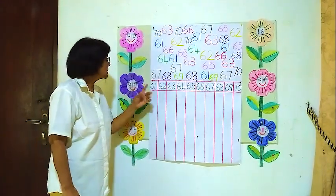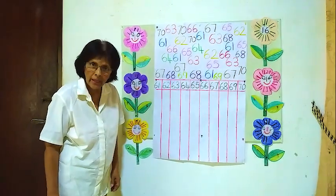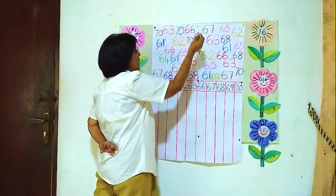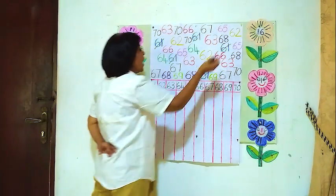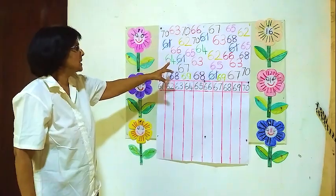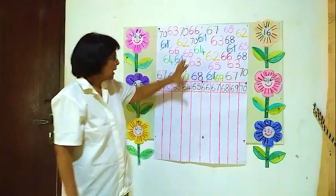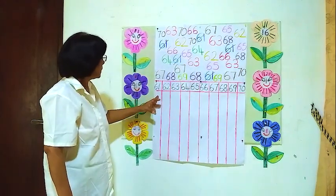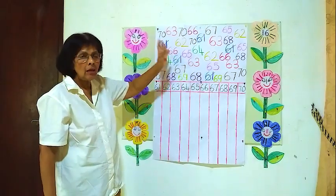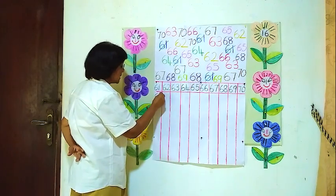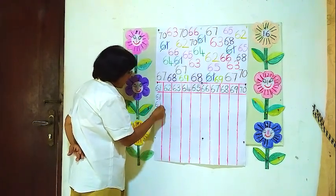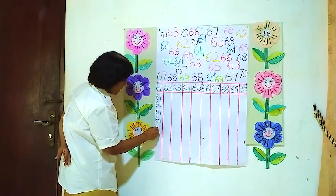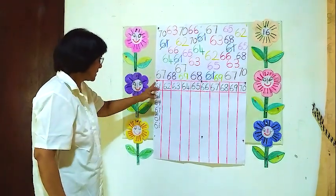Now we will start from 61. We will see how many 61's are here. Counting: 1, 2, 3, 4, 5. There are 5 61's here. So we will write them in the 61 column: 1, 2, 3, 4, 5 — 5 61's.